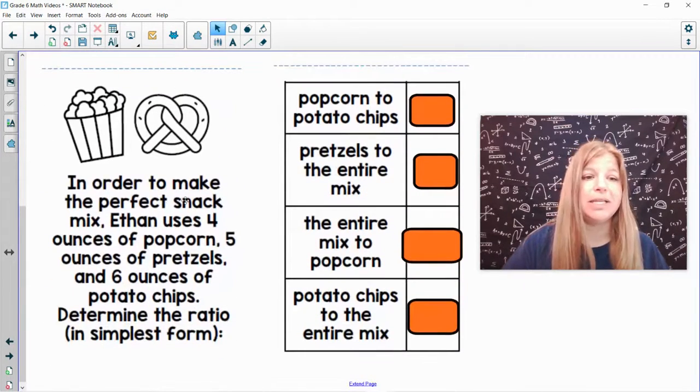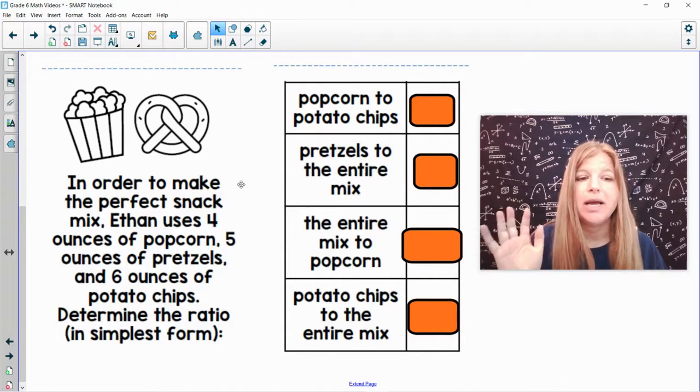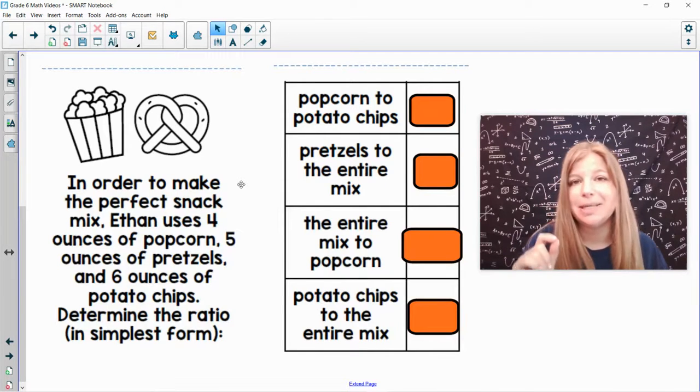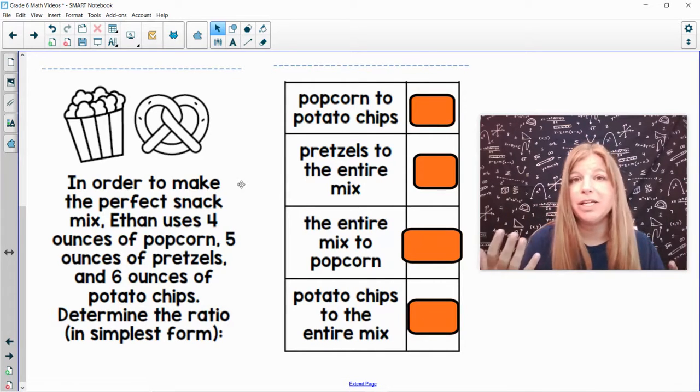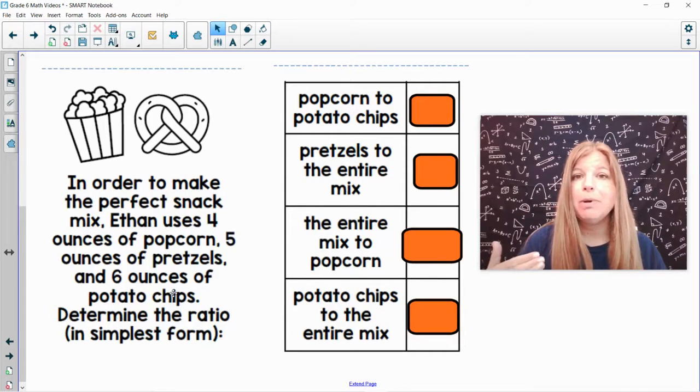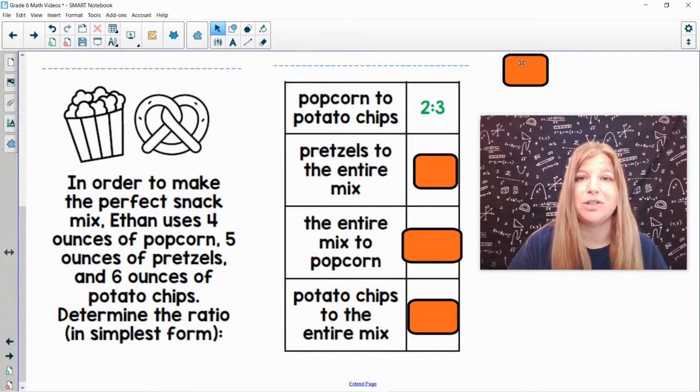So for example, in this first problem, in order to make the perfect snack mix, Ethan uses four ounces of popcorn, five ounces of pretzels, and six ounces of potato chips. Determine the ratio in simplest form. So we know that we can simplify fractions, and a fraction is one way to write a ratio. And so we can simplify our ratios just the same. The first one says popcorn to potato chips. So it says I'm using four ounces of popcorn, and I'm using six ounces of potato chips. My original ratio would be four to six. But four and six are both divisible by two. So instead of saying four to six, I can simplify that and say it's two to three.